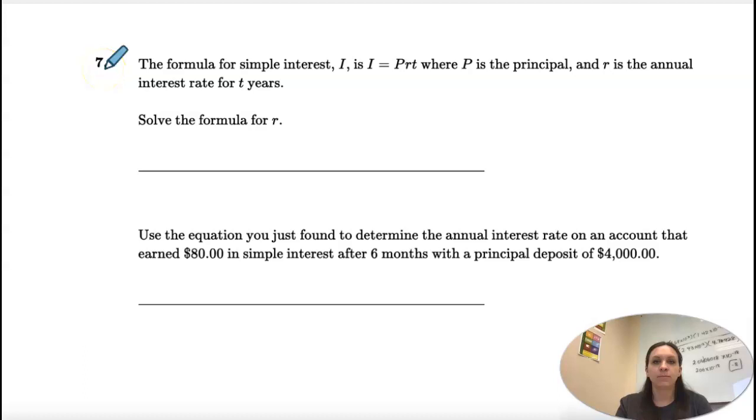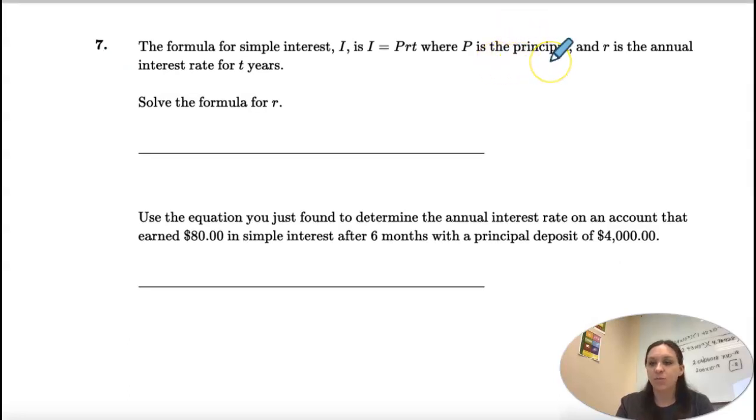Okay, number seven. We're given the formula for simple interest: I equals PRT. P is the principal, that's the amount you put in at the beginning. R is the rate, that's your interest rate, and T is time in years. So I is what you're making in interest.